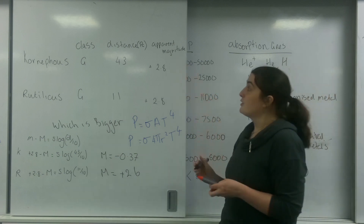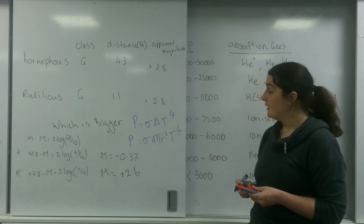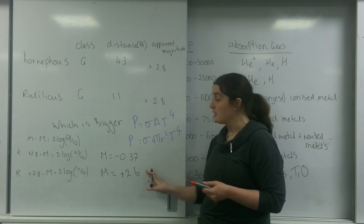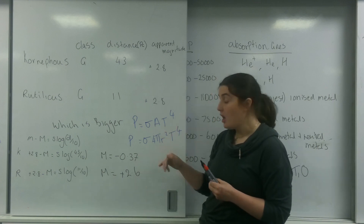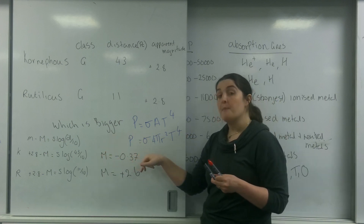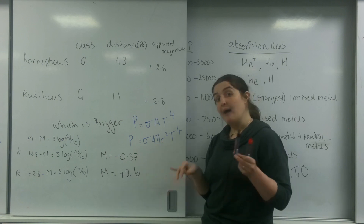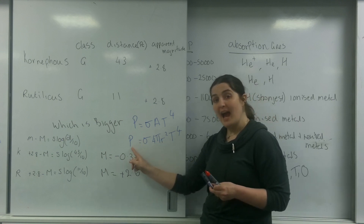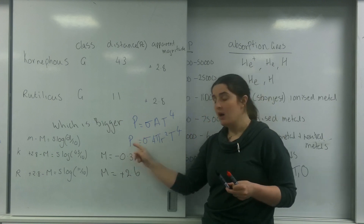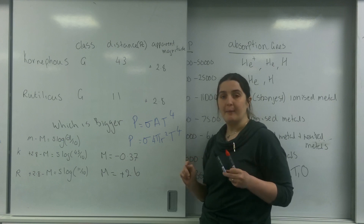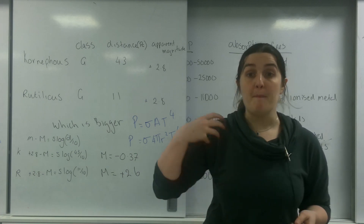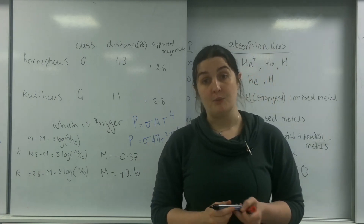As you can see, because Cornifos is much, much further away, it's actually much brighter — its absolute magnitude is much brighter than Rutilicus. And because they are of the same spectral class, their temperature is the same. This means Cornifos, because it has a much brighter absolute magnitude, must be emitting more power. Which means if it's emitting more power and the temperatures are the same, it must be bigger. So Cornifos must be the bigger star.